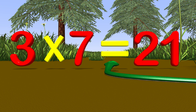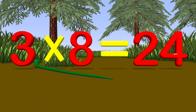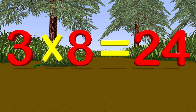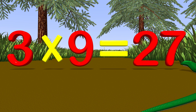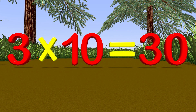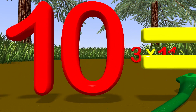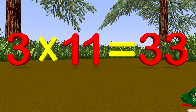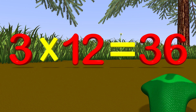Three times seven is twenty-one. Three times eight is twenty-four. Three times nine is twenty-seven. Three times ten is thirty. Three times eleven is thirty-three. Three times twelve is thirty-six.